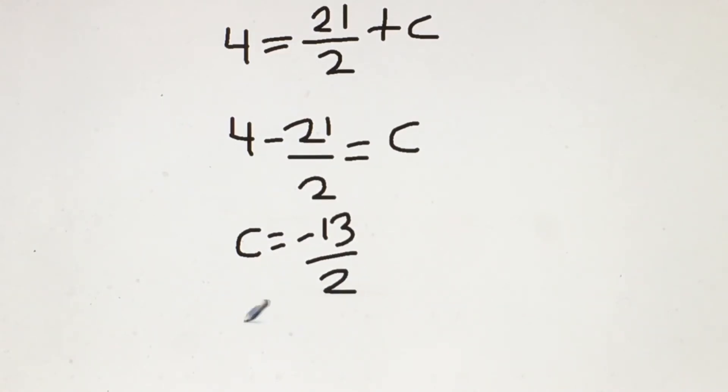We can write the equation out as y equals 3 over 2 x minus 13 over 2.